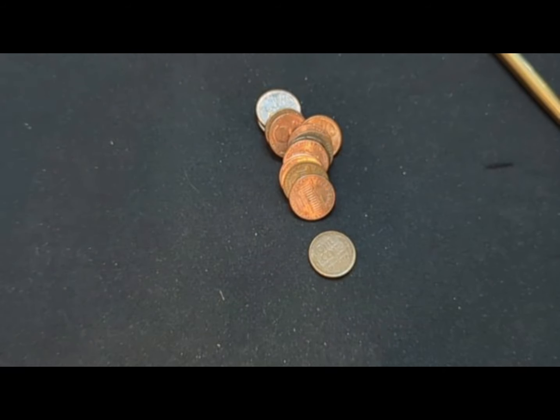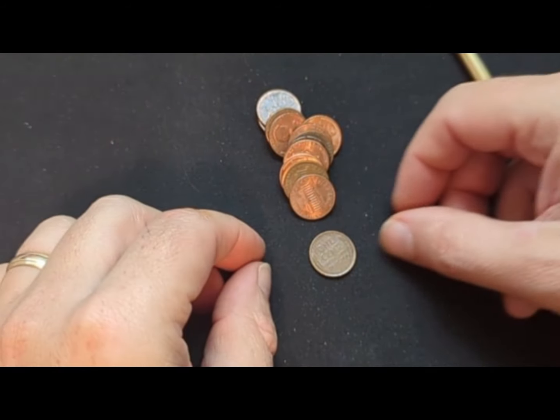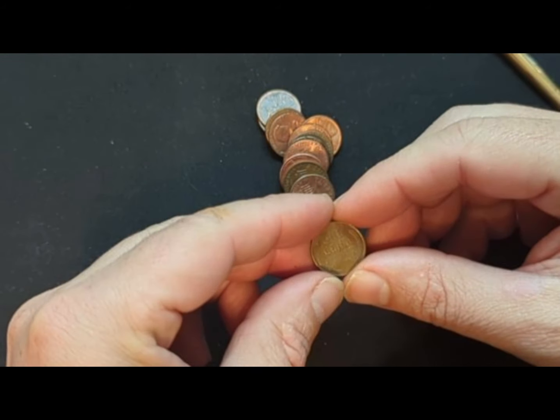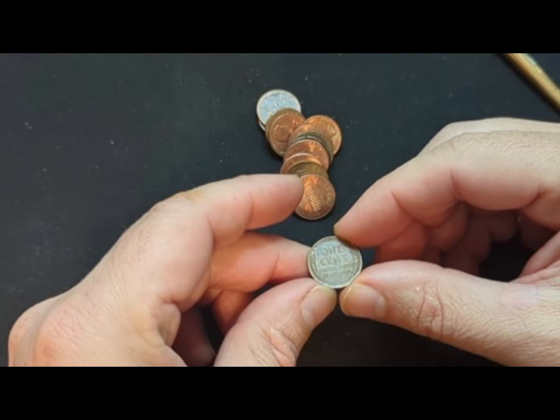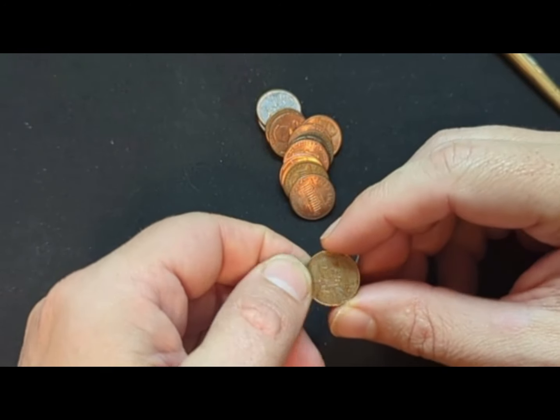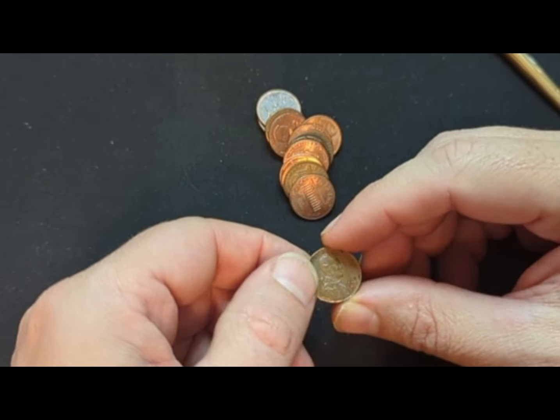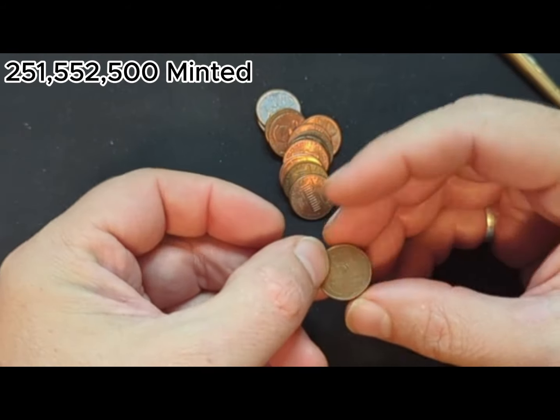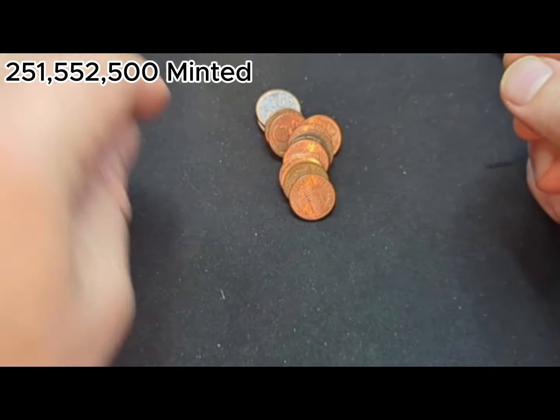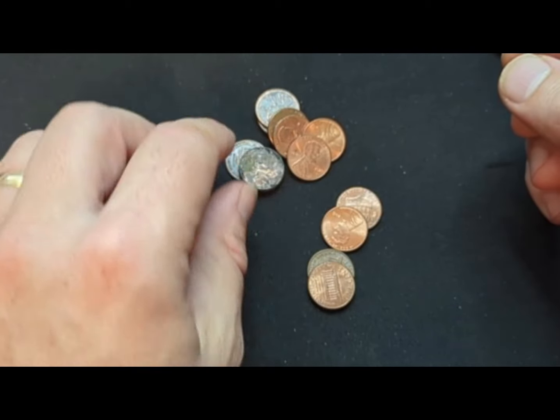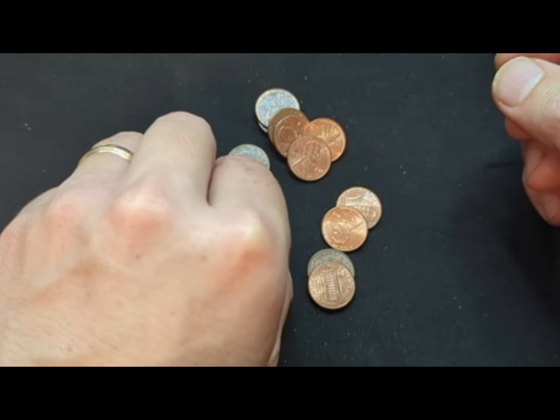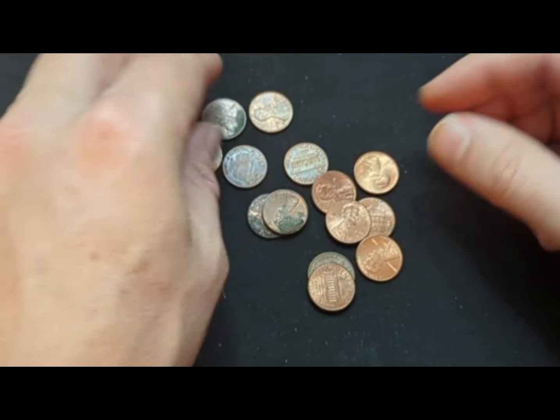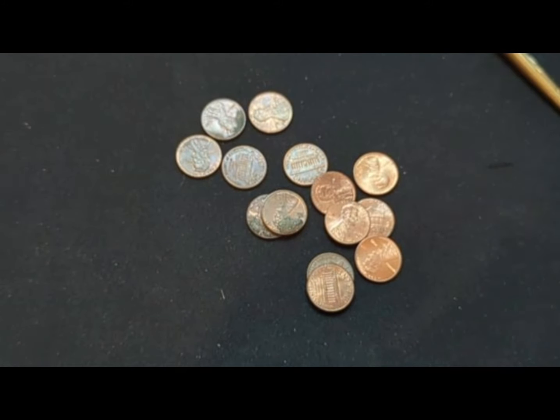Alright folks, here we are, roll number eight. Finally another find. So we have the 2009, coppers are starting to pick up, but we have our first wheat cent. And this is a 1954 Denver. So nice to see the wheats are out here. Hopefully this will be a sign of changing times with these rolls. Might have some coppers, but no more wheaties. Bring you back for the next find.